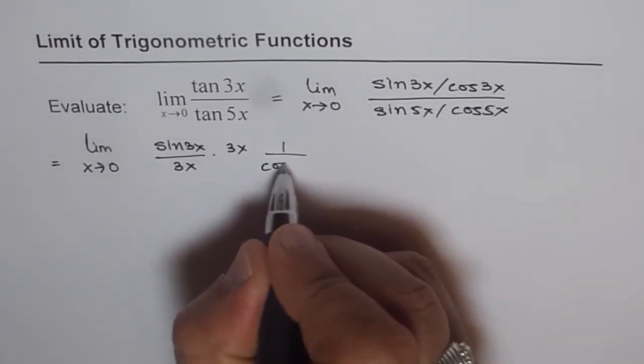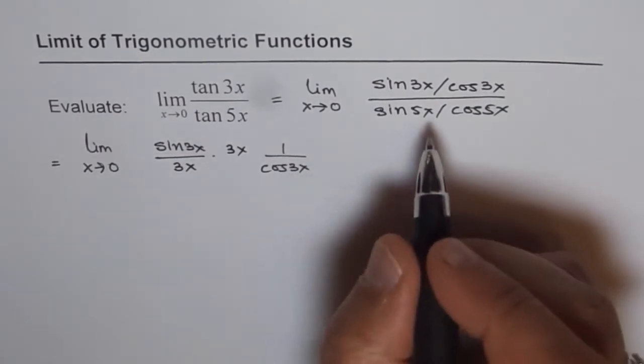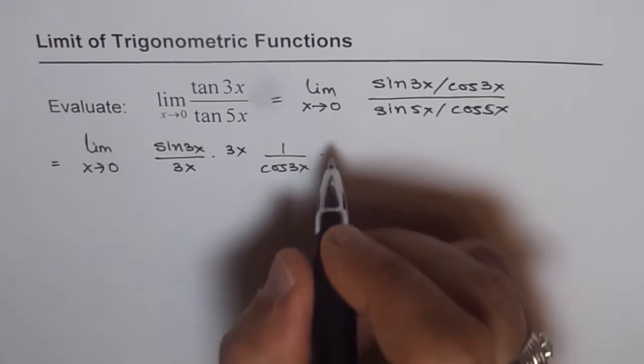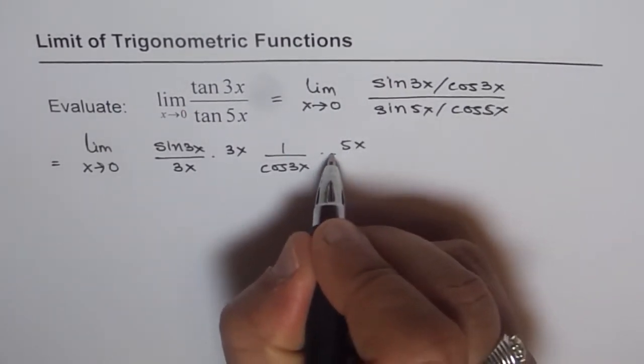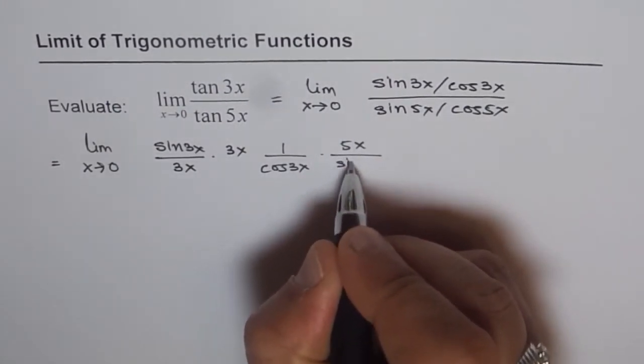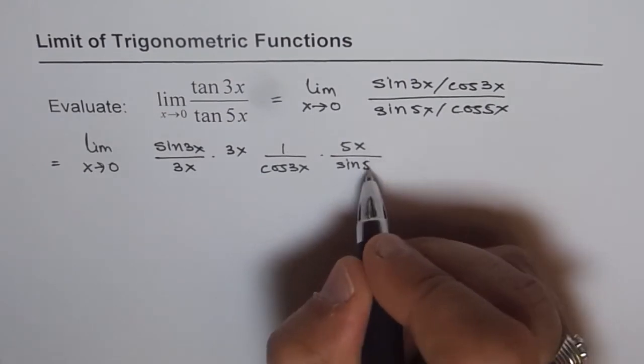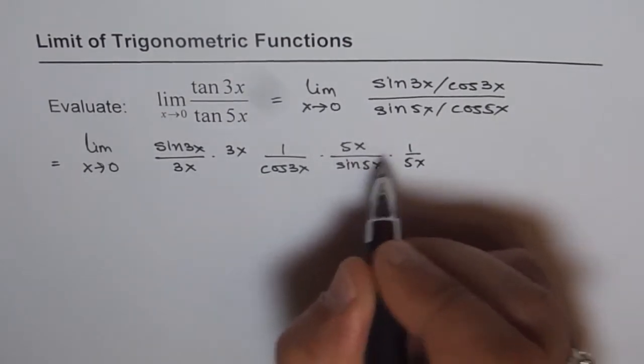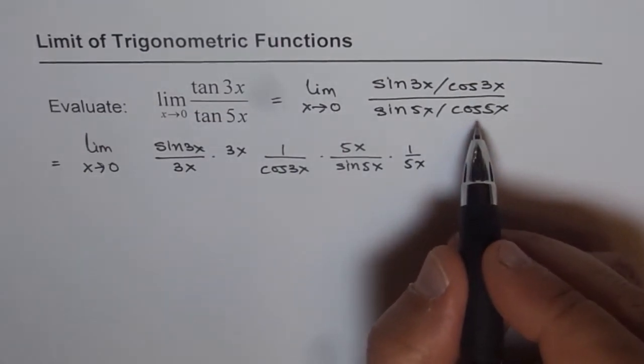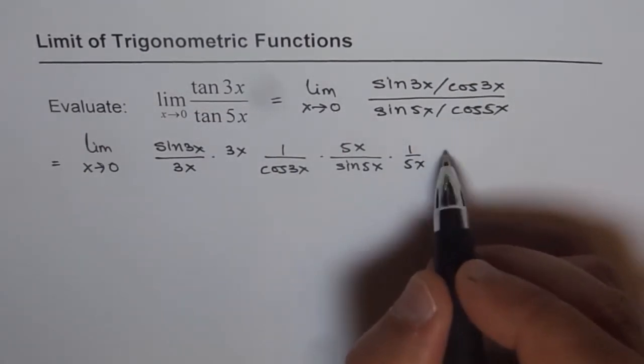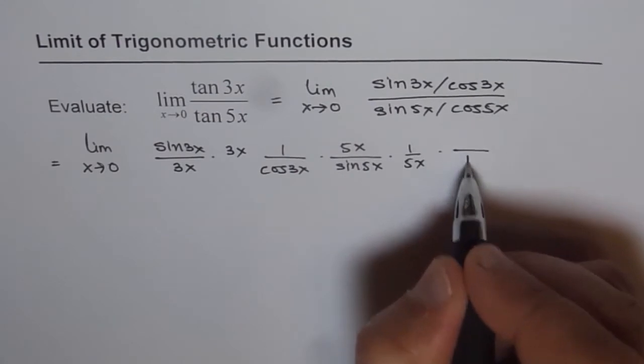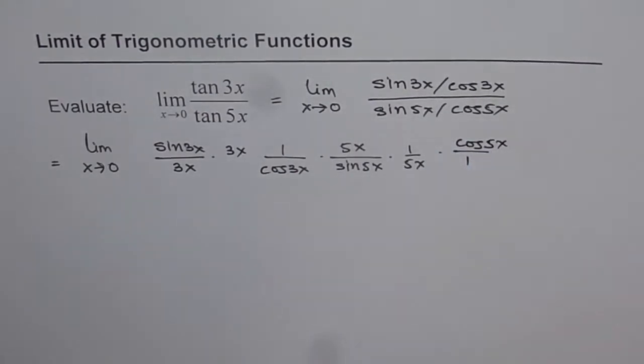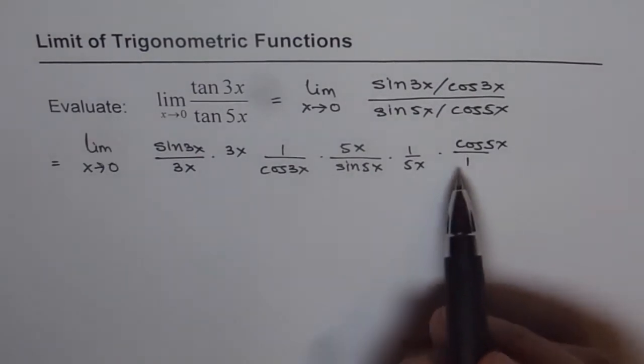Let me write this as 1 over cos 3x. And then we have sin 5x in the denominator. So what we will do is multiply and divide by 5x. Sin 5x times 1 over 5x. And then we have cos 5x in the denominator, which could be written as 1 over cos 5x. So that is an equivalent expression.